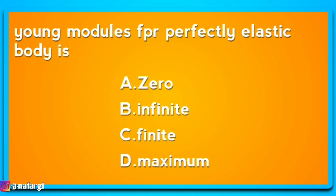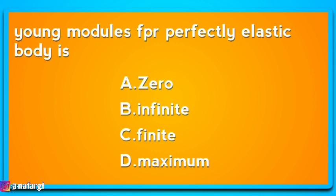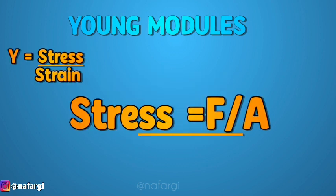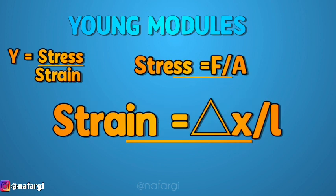For a perfectly elastic body, consider that stress is the force applied over an area, and strain is the change in length divided by the original length. An object has a force applied to the right, causing deformation. The change in x is the deformation relative to the original length — this is the strain.